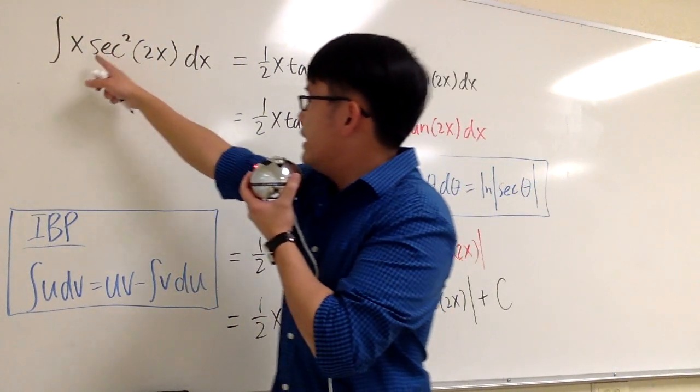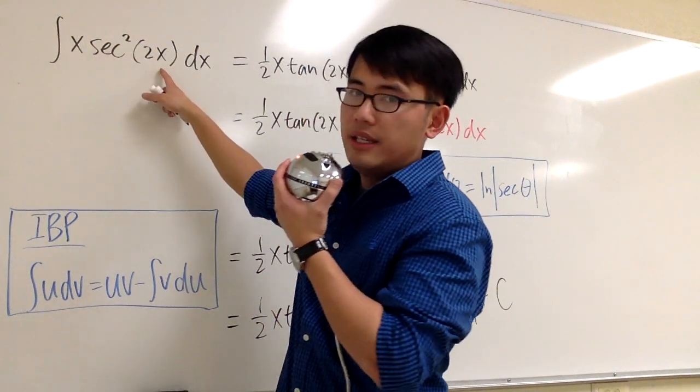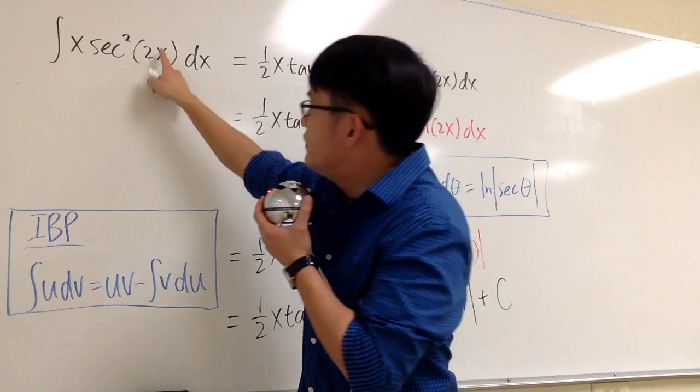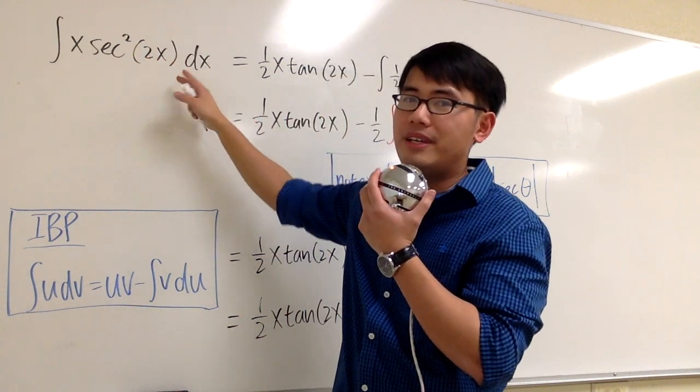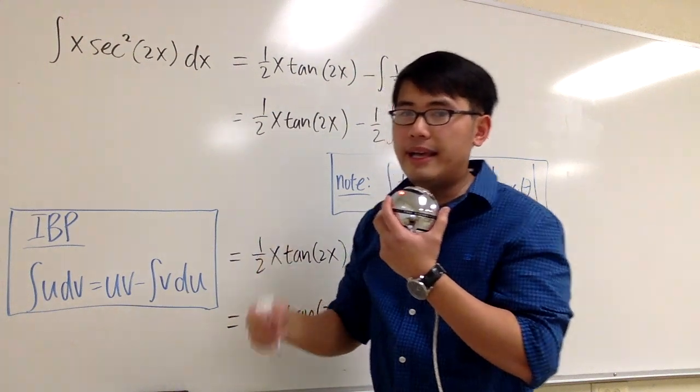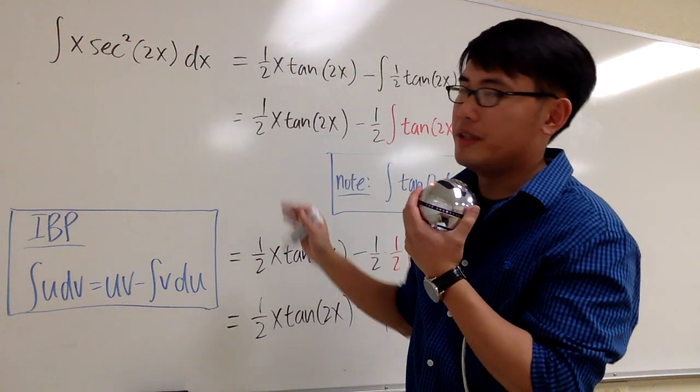Let's integrate x times secant squared of 2x. And let me point this out. If the inside was x to a second power, this question would be much easier, because we can just do u equals x to the second power. That question would be done.